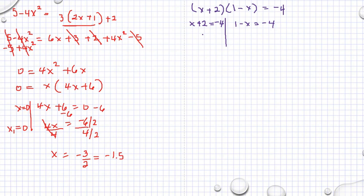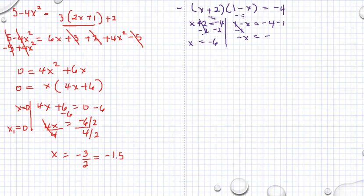If you incorrectly subtract both sides by 2, you get x equal to negative 6. Substituting negative 6 into the equation gives negative 4 times 5, which is positive 20, not equal to negative 4. And trying the other wrong approach, subtracting both sides by 1, gives x equal to 5 — which is also wrong.